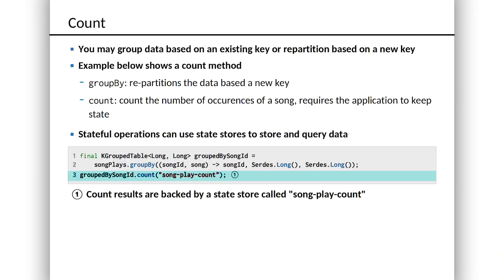Kafka Streams has internally an embedded state store that does that work, and each stateful operation that's going to accumulate state in that store — we name that piece of the store. Later on, this lets us use what's called the interactive queries API to go peek into that state store. So you could by key, which is by song ID, look in the state store and see right now what is the current count. Since you know it's called 'song play count', you can go into that part of the state store and query it interactively, effectively in memory at runtime. These are stateful transformations — there's a state store managing them, and we can go peek into it and get the details.